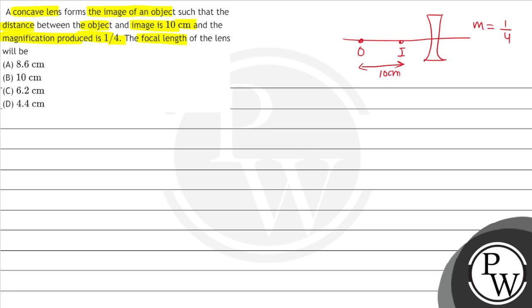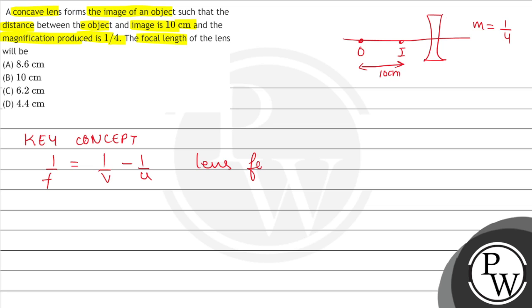In this question, we will use the key concept of the relation. The lens formula is: 1/f = 1/v minus 1/u. This is our lens formula.